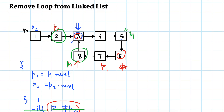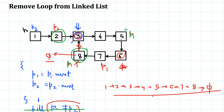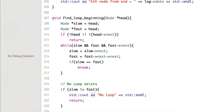Once the loop terminates, we make p1.next equal to null and we are done — we have removed the loop because p1 is the last element. Its next was pointing to 3 (the first element of the loop), and now it will point to null, so that link will not exist. When we traverse from head we go 1, 2, 3, 4, 5, 6, 7, 8 and then null — the cycle is removed.